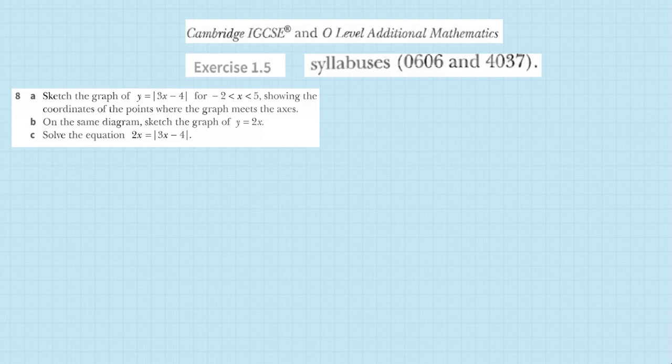My name is Professor Muhammad Asim and we are doing Additional Mathematics for IGCSE, which has syllabus code 0606, and CIE O Level, which has syllabus code 4037. As you know, students, we have started Chapter 1 from this book — the chapter name is Functions.